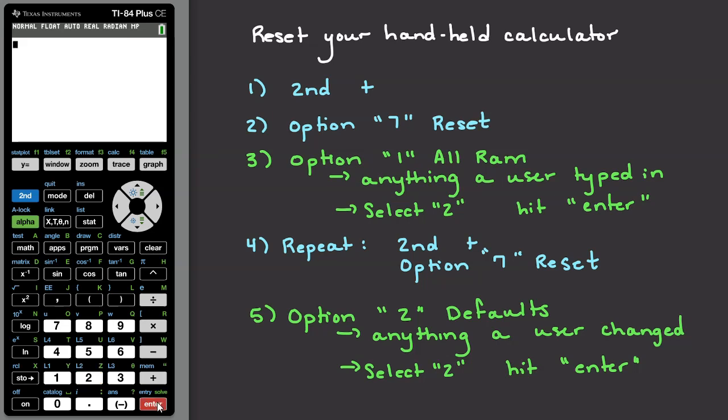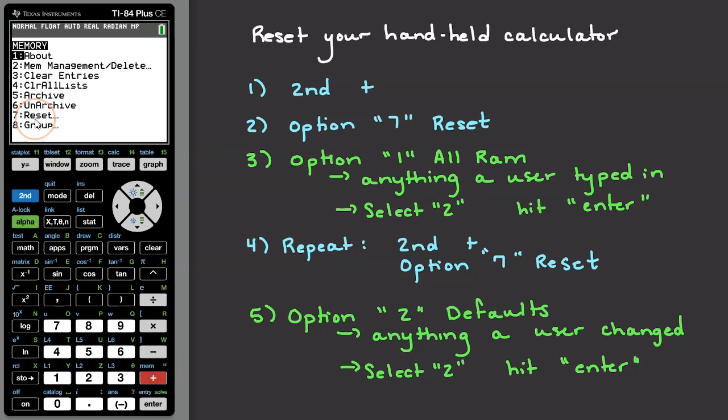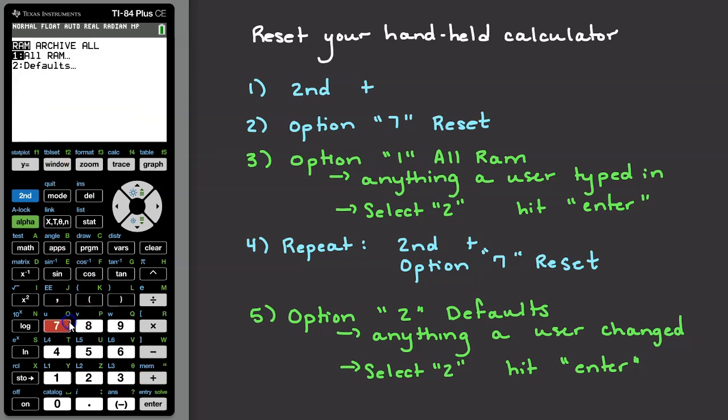Next, let's go ahead and reset those defaults. Hit 2nd again, then plus. Once again, select option 7, the reset menu, by hitting 7 on your calculator.